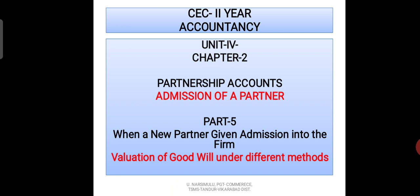In the last 4 videos, I have explained 3 important adjustments which we make at the time of admission of a partner into the partnership firm. So this is the 4th adjustment, that is Valuation of Goodwill when a partner enters into the partnership firm. In this video I will cover one method, and two more methods I will explain in the next video.